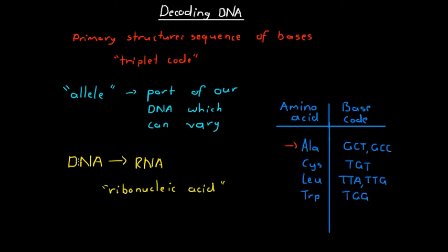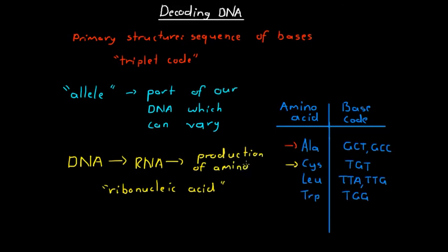For example, if the DNA molecule has the base sequence thymine, guanine, thymine — TGT — this signifies the production of the amino acid cysteine. The ribonucleic acid will decode that information, see that the base code TGT is on our DNA molecule, and carry that information over to the production site for amino acids, where cysteine is then produced. The RNA is essentially a messenger between the DNA and the actual production site of the amino acids.